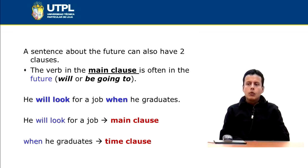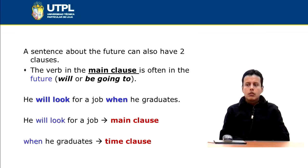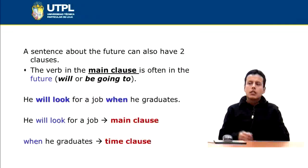The main clause is 'he will look for a job' — also called the independent clause. And the time clause is 'when he graduates,' which starts with 'when' that indicates time, and it is a dependent clause. So we have the independent clause 'he will look for a job' and the dependent clause 'when he graduates,' also called main clause and time clause.